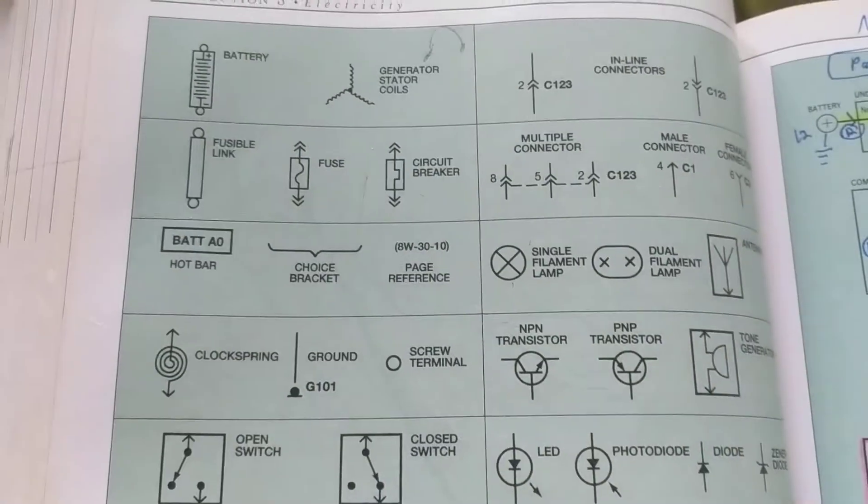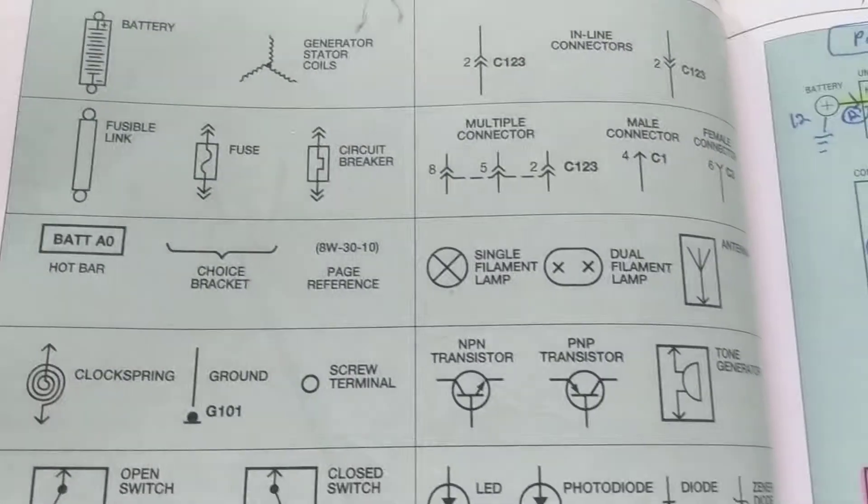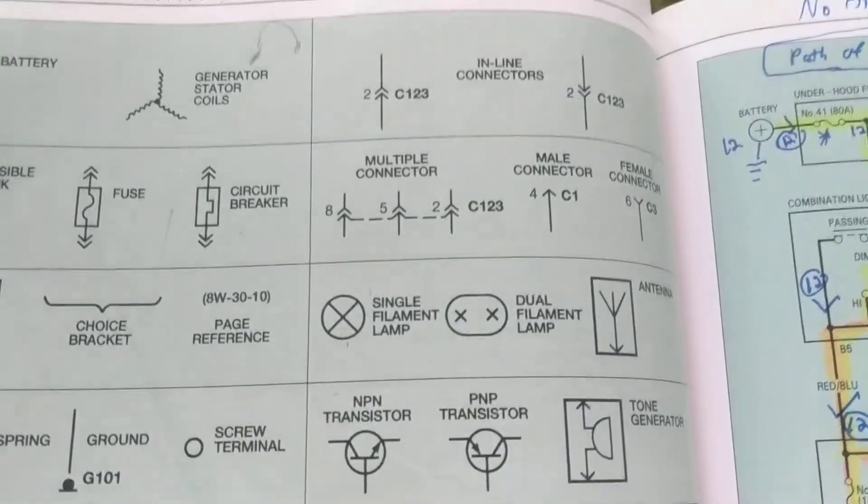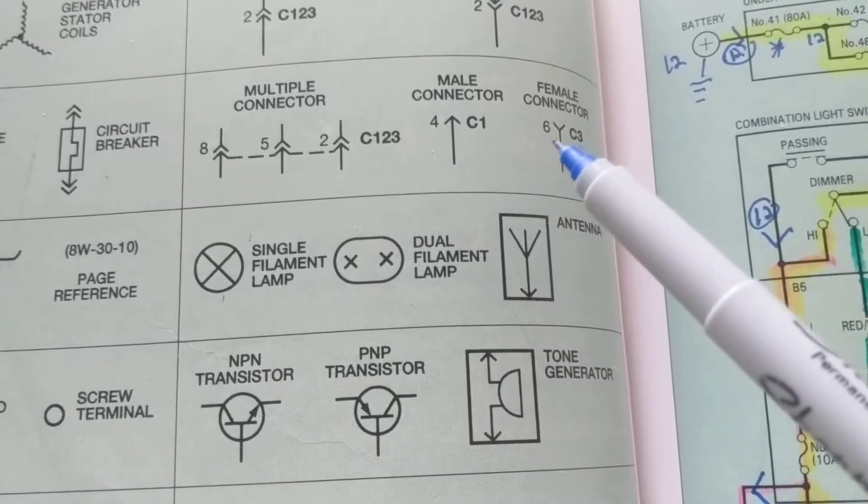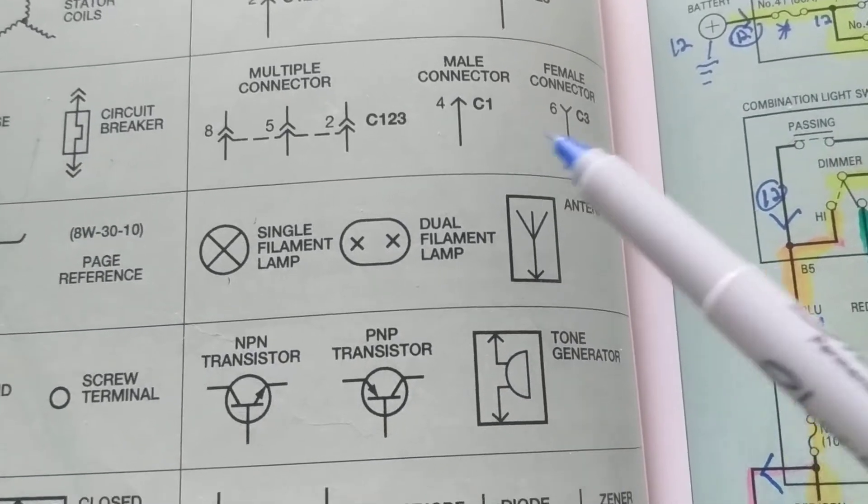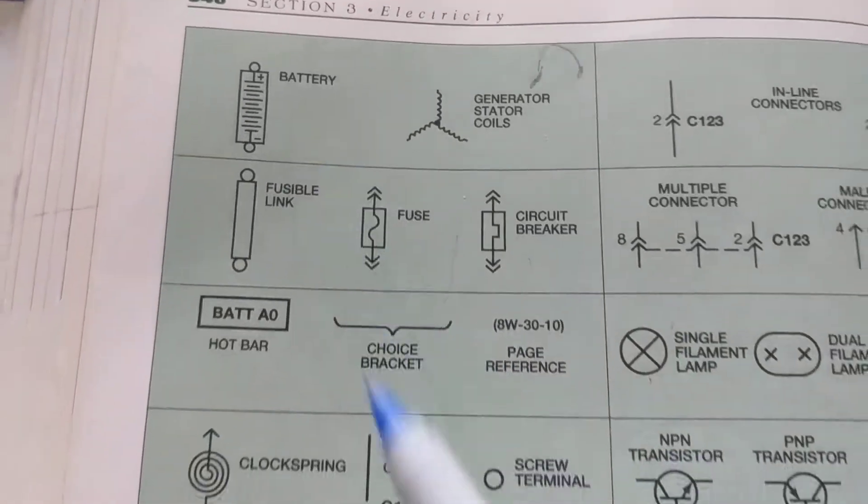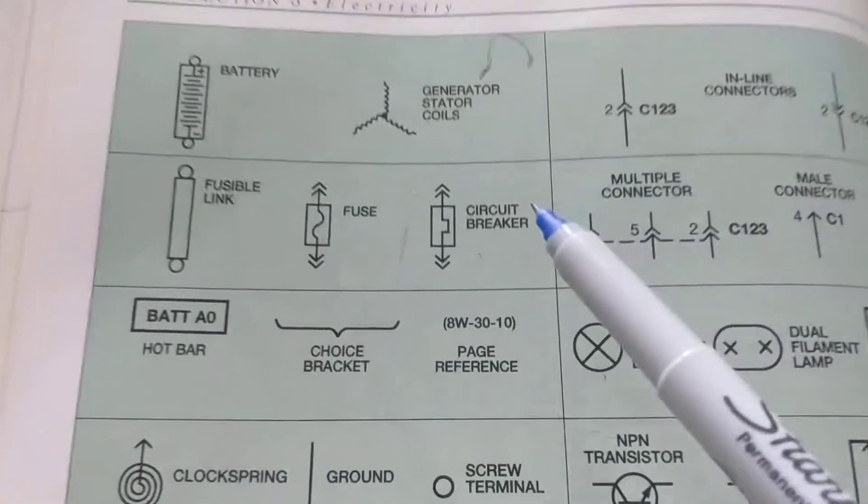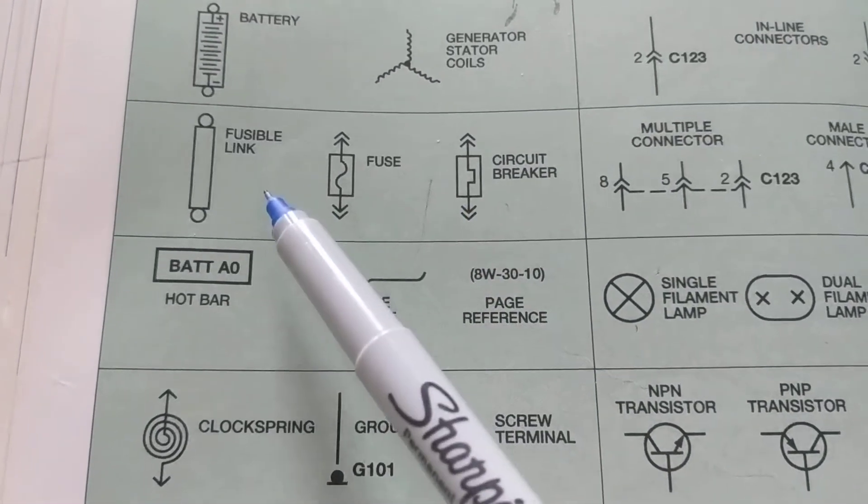Now, if you look at the symbols that I had previously, the ones that always come up are the connectors for male and female with the pin number. C1 is the connector, C3 is the battery terminal, this is an alternator, the fuse, and fusible link.